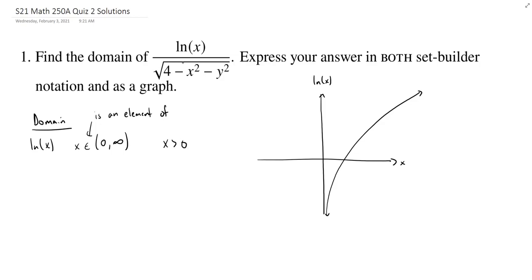How about in the denominator? In the denominator, we have a square root, so we're going to need that what's under the square root is not negative. So we need 4 minus x squared minus y squared to be at least 0.